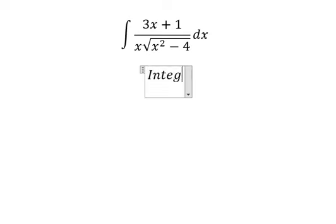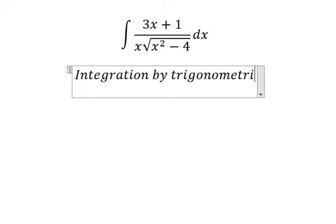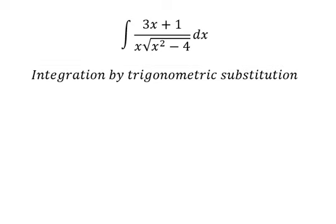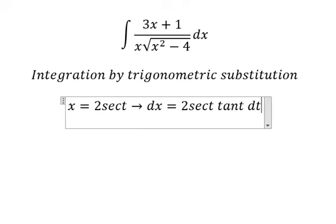We need to use integration by trigonometric substitution. So we put x equal to 2 sec of t, and dx equals 2 sec of t times tan t dt.